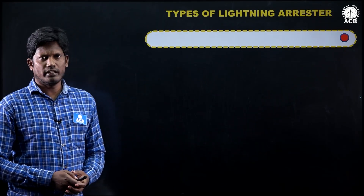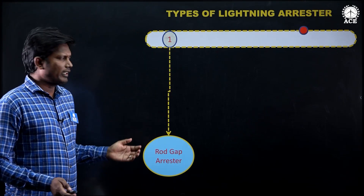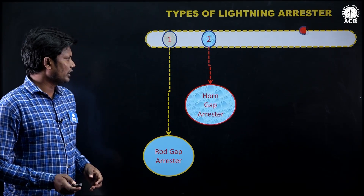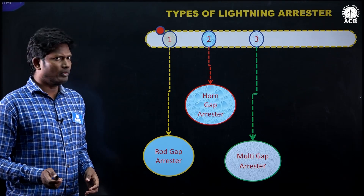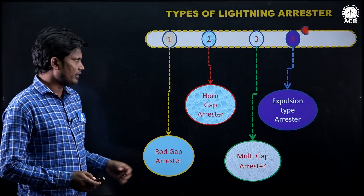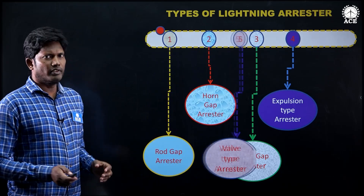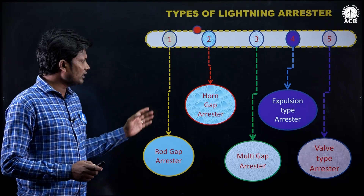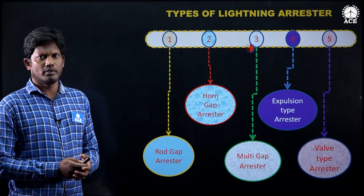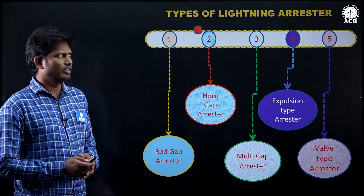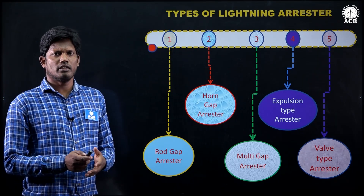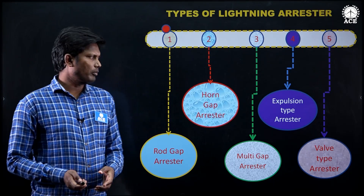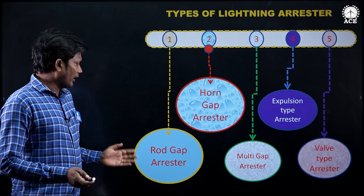The types of lightning arrestors: the first one is rod gap arrestor, the second one is horn gap arrestor, the third one is the multi-gap arrestor, the fourth one is expulsion type lightning arrestor, and the fifth one is the valve type lightning arrestor. The operating principle of all these types of arrestors is the same — they conduct the high voltage from line to ground. They differ only in their construction. In today's class, I will discuss about the first two arrestors.